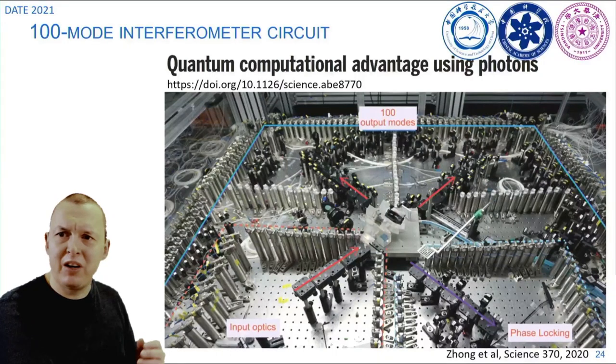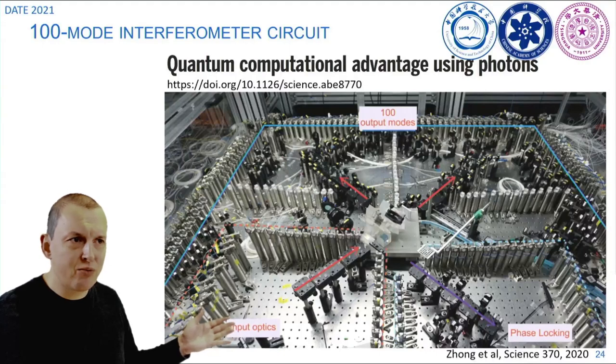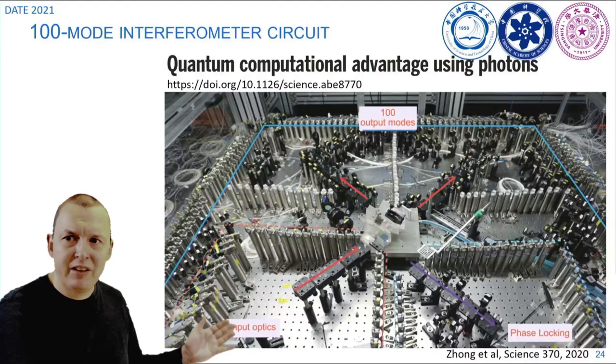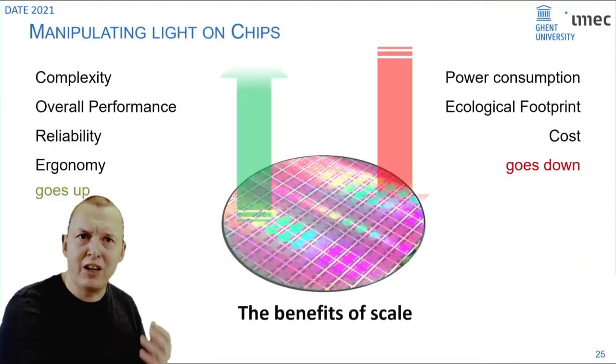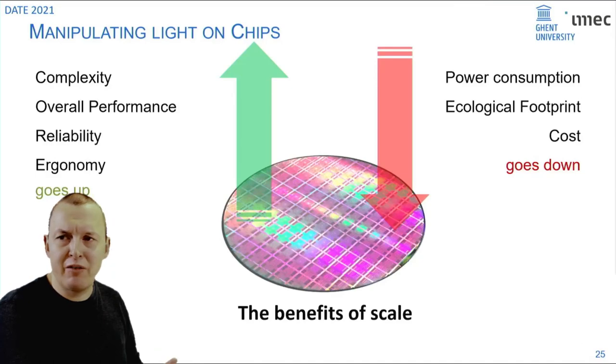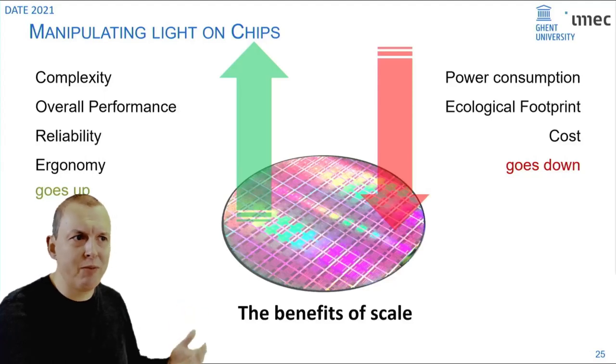Wouldn't it be nice if you could build such a system in a much more stable way that doesn't require all this stringent mechanical control? That's what happens when you start integrating photonics on a chip. Just like with electronics you get a lot of benefits when you integrate many functions on a chip. You can get better complexity, you gain performance, and at the same time your power consumption and your costs go down. The benefits of scale help you make these large-scale photonic systems.